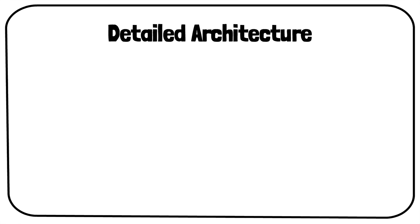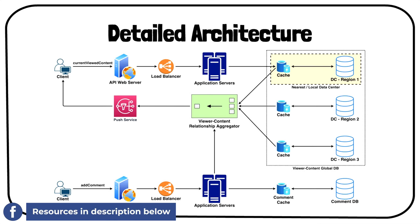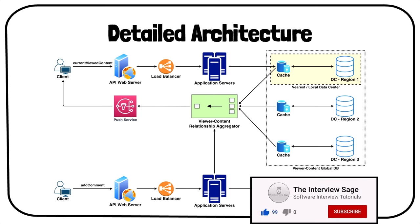Following is the detailed architecture of this design. It involves various components like viewer-to-content relationship aggregator, databases for storing the comments and viewer-to-content associations, caches for fast retrieval, application servers, load balancers, and the push service. We have added a blog post from Facebook Engineering in the description box below, that we suggest going through to better understand these concepts and the current system deployed at Facebook to handle this specific problem at scale. We will be creating a dedicated video to discuss this question in great detail, so subscribe to our channel to get notified. For now, let us move to the next question.